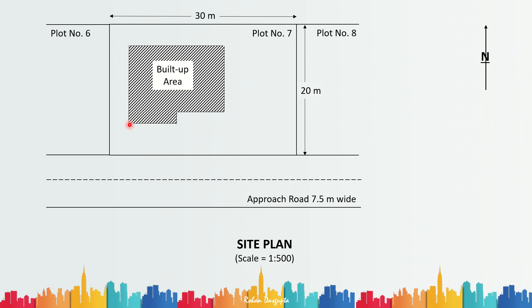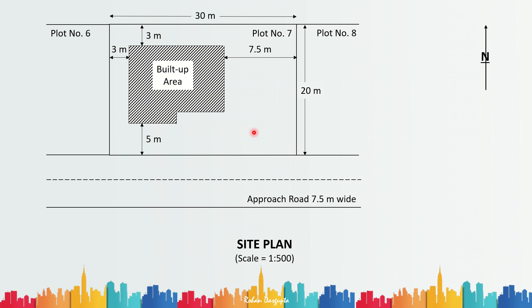Next you have to show the built-up area of the project. The built-up area has to be hatched so that it is seen clearly against the plot. At a scale of 1 to 500 the built-up area has been reduced to a smaller size. Next you have to show the open spaces around the plot. The front open space is 5 meters, the rear open space is 3 meters, the left side open space is 3 meters, and the right side open space is 7.5 meters. Whatever the case for your project, you have to show these four open spaces around the built-up area.